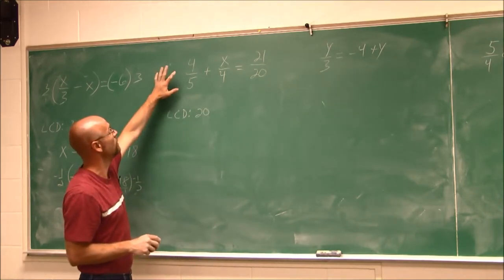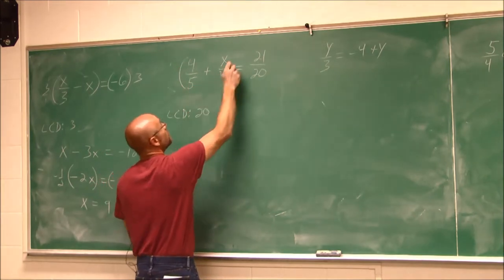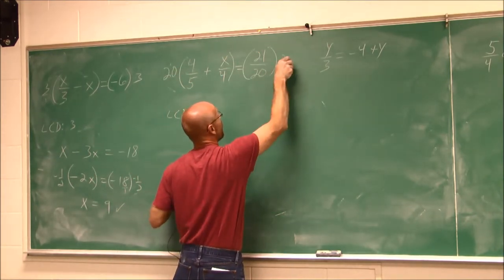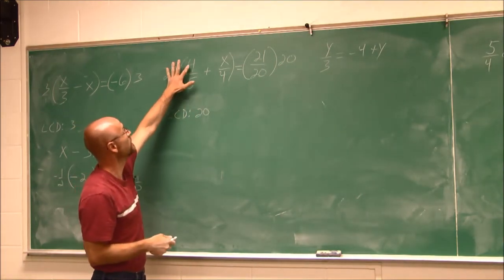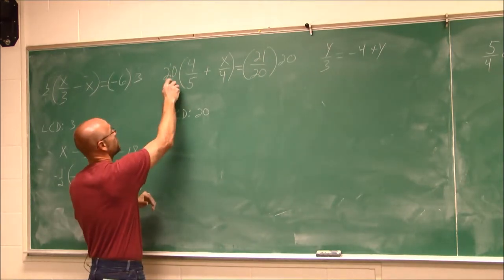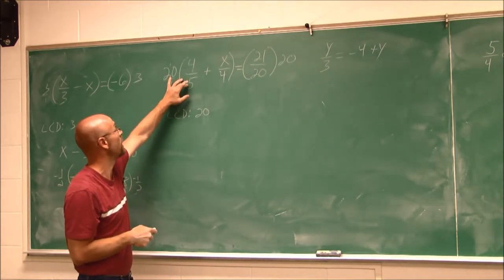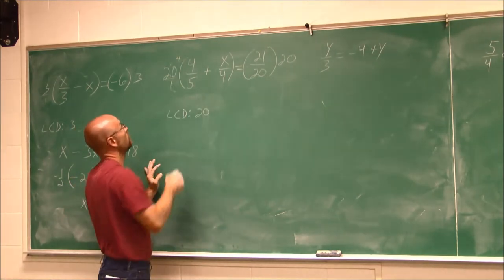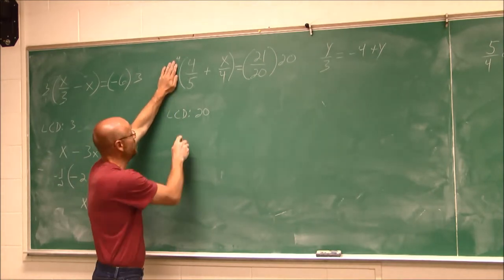So now I have to say, if I multiply both sides of the equation by 20, and what I do to one side, I do to the other, we're going to see these fractions just disappear. 20 times 4 fifths. Let's think of it again as 20 over 1. 20 and 5 have a common factor of 5. So this will reduce that to a 4, 4 over 1. So we've reduced it. 4 times 4 is 16.